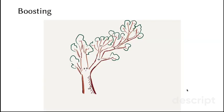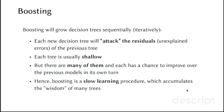Boosting procedure is a bit different, but it also has the idea of training many trees. Boosting will grow decision trees sequentially. Each new decision tree will attack the residuals, the unexplained errors of the previous tree. And each tree is usually shallow, so it's not a complicated tree. But there are many of them, and each has a chance to improve over the previous model in its own turn. Hence, boosting is a slow learning procedure which accumulates the wisdom of many trees.